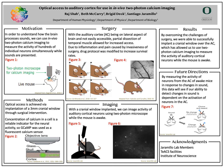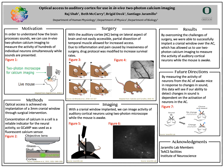Motivation. How does a brain process sounds? In order to understand this, we have a powerful tool known as two-photon calcium imaging that allows us to measure the activity of hundreds of individual neurons simultaneously. In figure one, you can see that this is done in vivo, meaning while the mouse is awake and being presented with sounds, we're able to image the neurons responsible for sound processing.